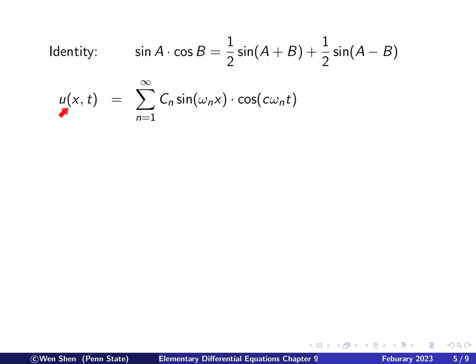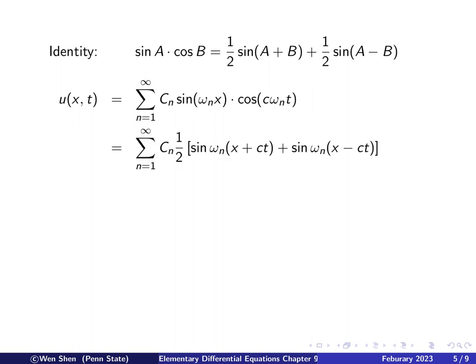Let's apply this to our solution. The solution is a sum over c_n of sine(omega_n x) times cosine(lambda_n t), where lambda_n equals c times omega_n t. Applying the trig identity with angle a equal to omega_n x and angle b equal to c times omega_n t, we get a factor of one-half, and the c_n is constant. For sine(a+b), factoring out omega_n gives the argument x plus ct. Similarly, sine(a-b) gives the argument x minus ct.